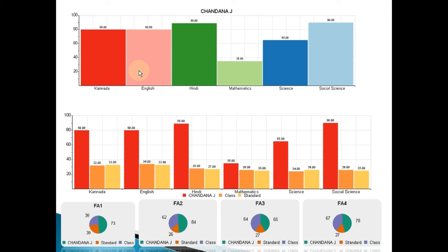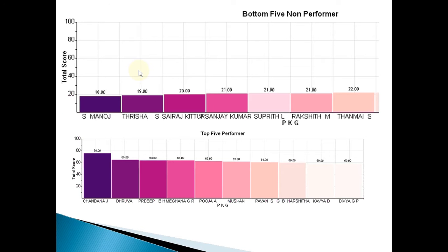You can see how Chandana has performed with respect to her class and grade — she is almost a topper in each of the subjects when compared to the whole class. In each of the tests like FA1, FA2, FA3, FA4, you can see how Chandana has performed. There is also a graph where you can find out who are the bottom five non-performers, so you can plan how to help them improve in their respective subjects, and also see the top five performers in the second graph.